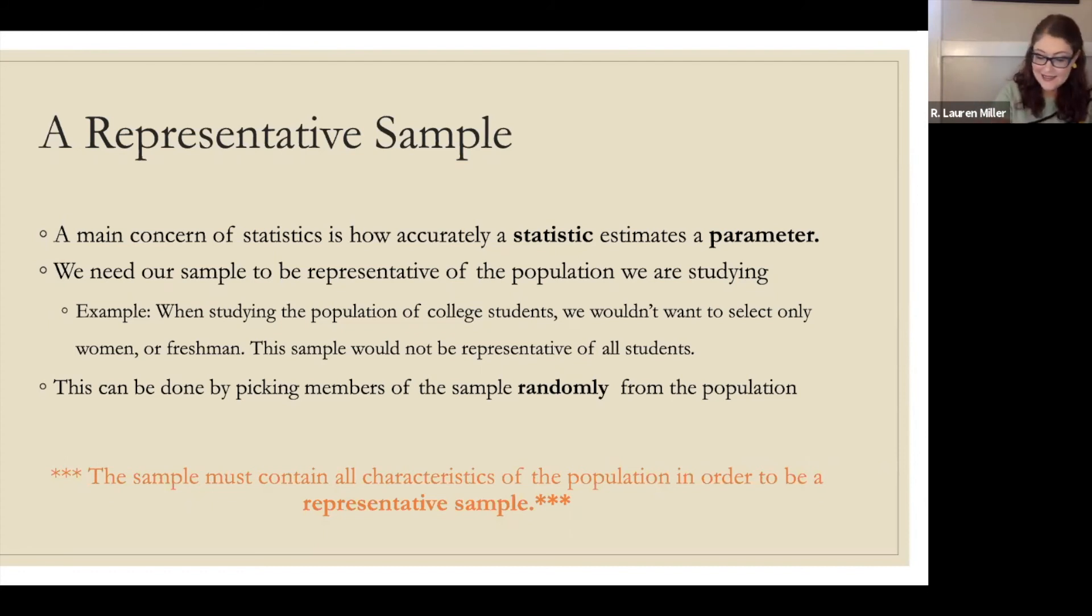A main concern of statistics is how accurately a statistic estimates a parameter. Our sample has to be representative of our population we're studying in order to have our statistic estimate the population parameter.